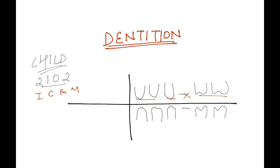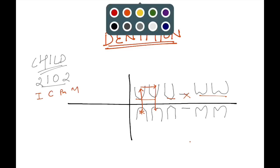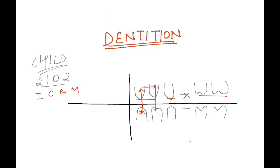Let's see the age at which these teeth erupt. Starting with the first one to arise: the lower central incisor, then the upper central incisor. There's a sequence — start from the lower, move upward, then move right. The lower central incisor erupts at six months, the upper central incisor at seven months, then the lateral incisor at eight months, and the lower lateral incisor at ninth month.